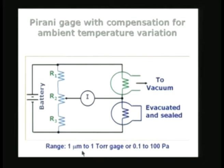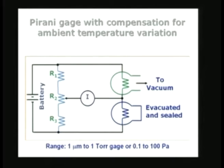The range of the Pirani gauge is from 1 micrometer pressure — that is 10⁻⁶ millimetres of mercury — to 1 millimetre of mercury, or 0.1 to 100 Pascals. The Pirani gauge is usually used with the rough vacuum pump. When the rough vacuum pump reduces pressure to a value somewhere in this range — from 100 Pascals to about 0.1 Pascals — we can use the Pirani gauge. If the vacuum pressure is even lower, that is higher vacuum, a different type of gauge is needed.